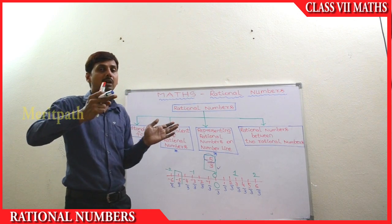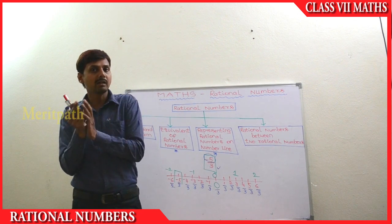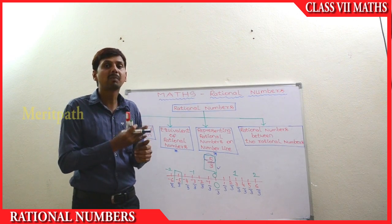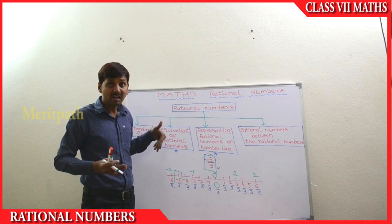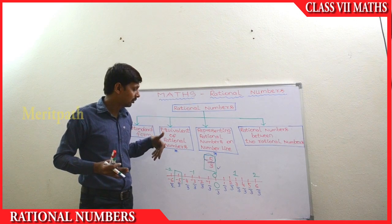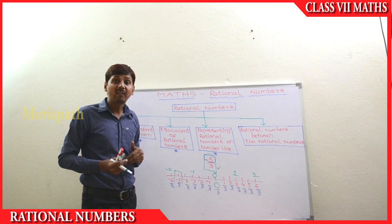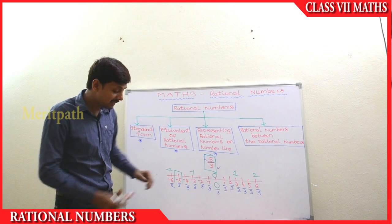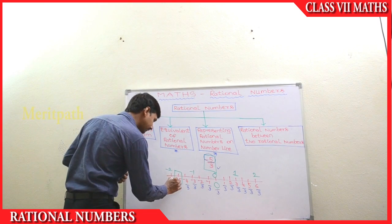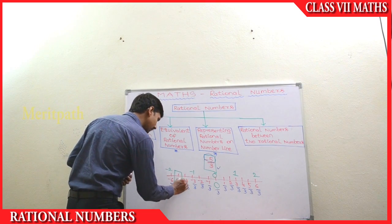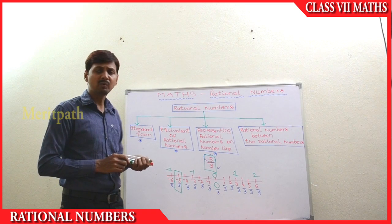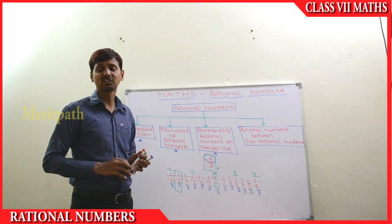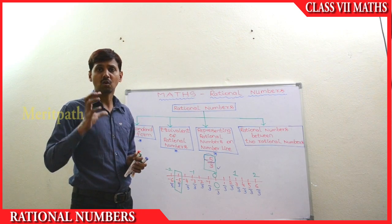The numbers which are between one integer and another integer are divided into 3 equal parts. So we have written 3 equal parts. We can observe that this is minus 5 by 3 — this is the point of minus 5 by 3. In this simple way, we can find out any rational number on the number line, either positive or negative.